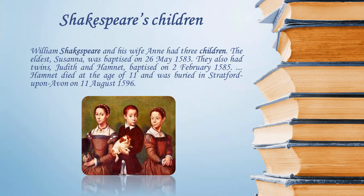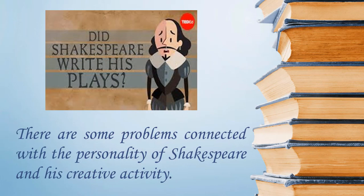Twins arrived in January 1585, baptized on February 2 of that year and named Hamnet and Judith, after two very close friends of William — the Stratford baker Hamnet Sadler and his wife Judith. Tragically, Hamnet Shakespeare died of unknown causes in August 1596 at the age of 11; the events of his short life are unrecorded.